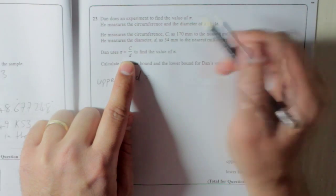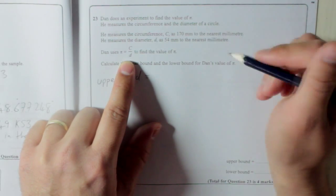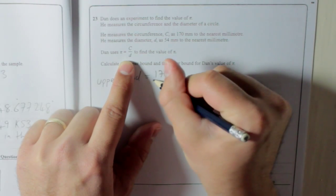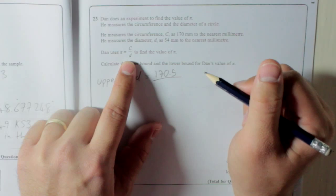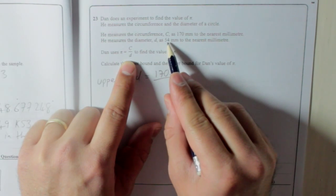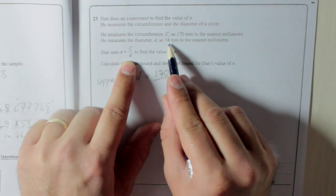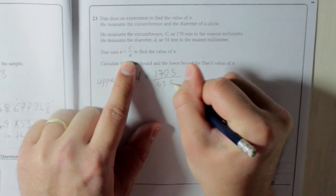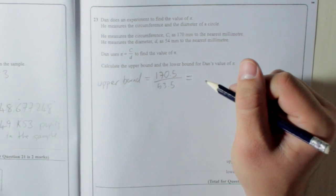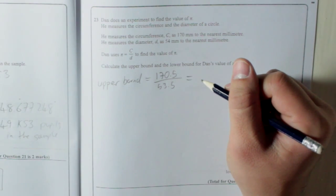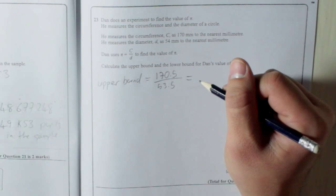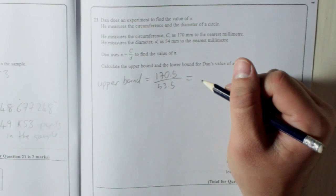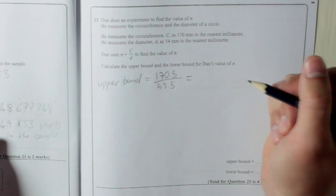So, the biggest possible C, 170, we're going to use as 170.5. We're going to divide that by the smallest possible D, so 54. The smallest, because it's the nearest millimeter, the smallest it could have been was 53.5. So work that out. 170.5 divided by 53.5, which is 3.186.